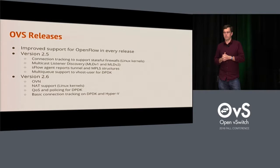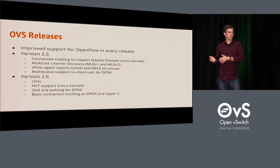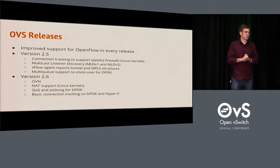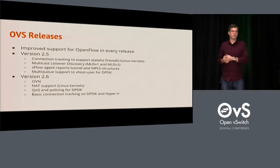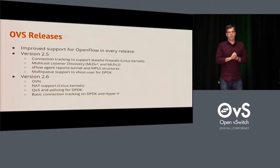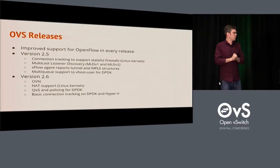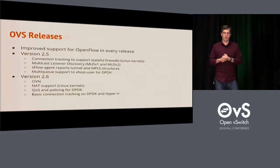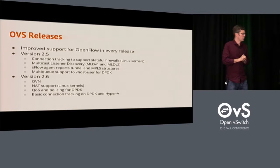With connection tracking, we found a way to use OpenFlow to define stateful rules in a protocol that doesn't usually support stateful things, and we leveraged the connection tracker in the Linux kernel. The initial release in 2.5 was just for the Linux kernel. In 2.6 we started adding basic support for the other data paths, and that will continue to improve.